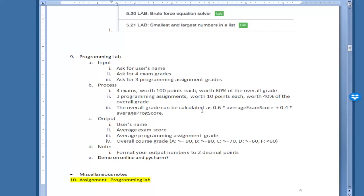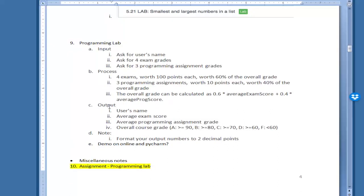Overall grade can be calculated as 0.6 times the average exam score. You may want to use this as a variable for the average. You can find the average by adding four exams and dividing by four. Then 0.4 times the average program score. You can do the same thing for the programming assignment by adding all three and dividing by three. Then I'd like you to print out the user's name, average exam score, average programming score, and figure out what the grade is.